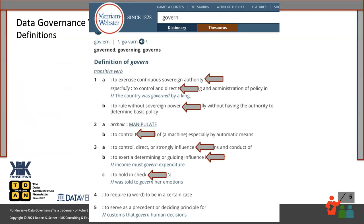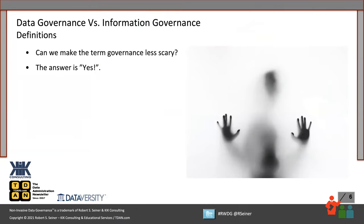Let's look at the word governance itself. The dictionary definition uses strong words: to exercise authority, to control, to direct, to rule. There's a common theme — governance is a term that many people find scary. Organizations are thinking, do we need to call it something else that will be more acceptable? Yes, there are ways to make the term governance less scary, but it's not going to be by adding the word data, information, or metadata in front of it. You need to focus on the approach that you take to governance.